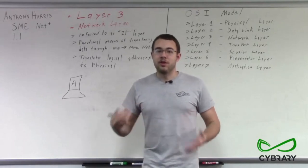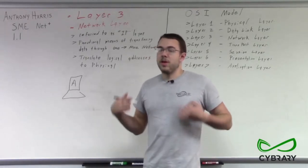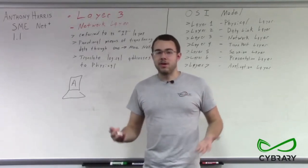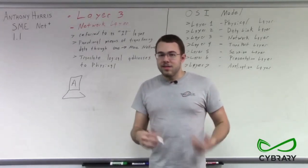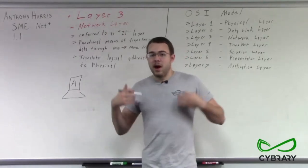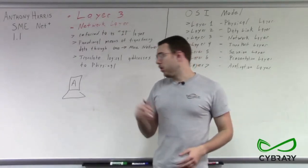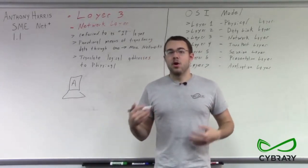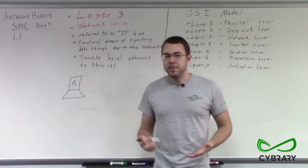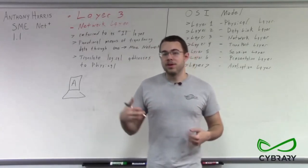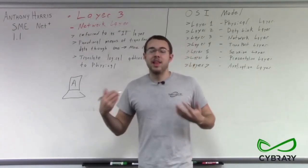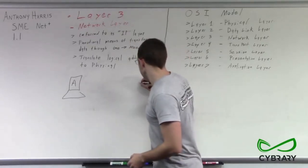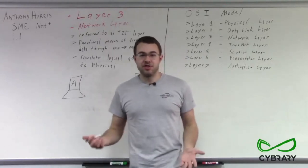Computer A is going to break that data down into electrical impulses. These electrical impulses are then going to be sent out over our network interface card over a cable. All of these cables, bits, and electrical impulses are going to be layer 1 — the physical layer. If you hear someone referring to a layer 1 issue, that means there's a problem somewhere between point A and point B with the physical connections.